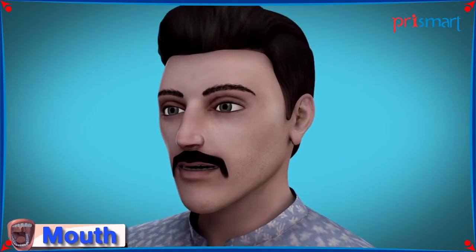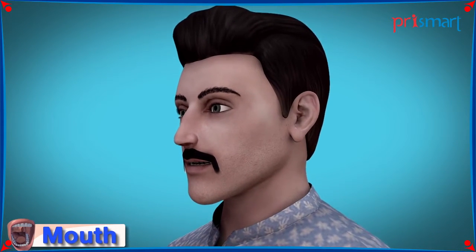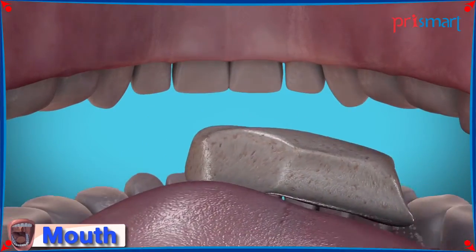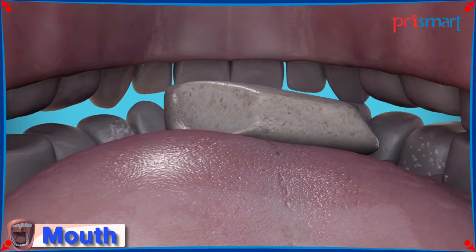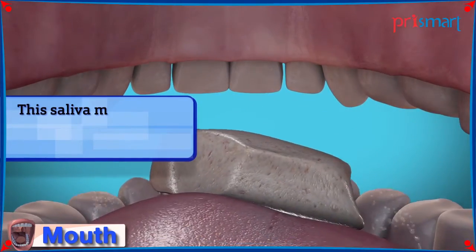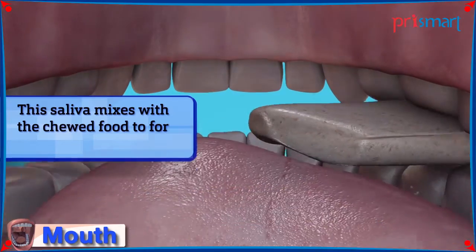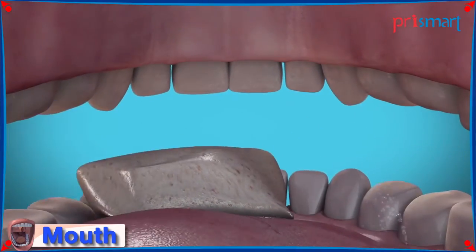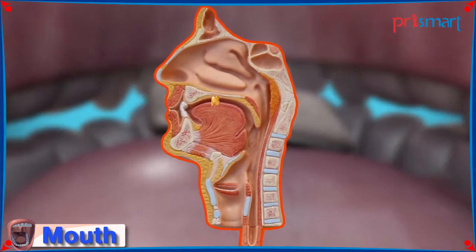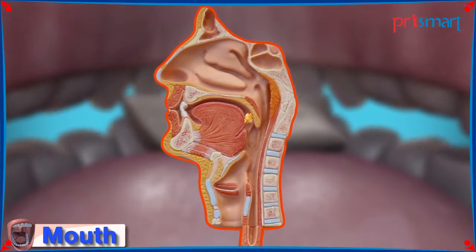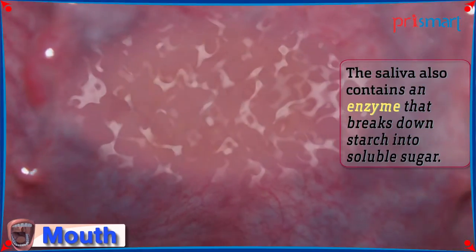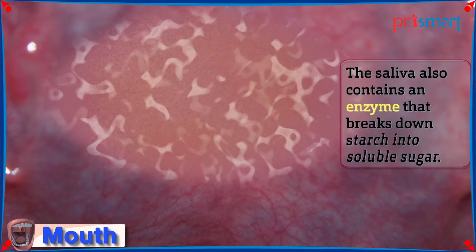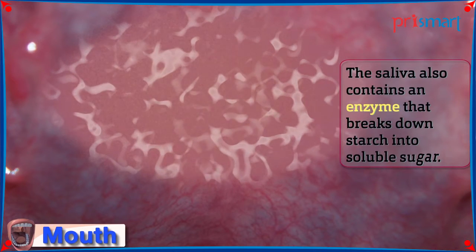Mouth. When the food is put into the mouth, the teeth start grinding it into smaller pieces. At the same time, saliva is produced by the salivary glands present in the mouth. This saliva mixes with the chewed food to form a semi-liquid paste. This happens because solid food is tough to swallow and digest. The saliva also contains an enzyme that breaks down starch into soluble sugar.